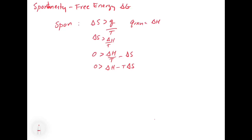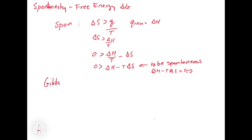This is the classic equation that you probably remember from high school, and this is what we base our understanding of Gibbs free energy off of. So in order for a reaction to be spontaneous, delta H minus T delta S must be a negative number. We call this the Gibbs free energy change, and we say that delta G is equal to delta H minus T delta S.